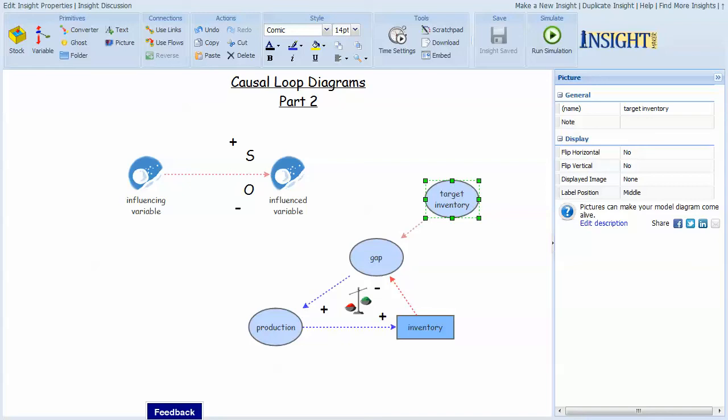All balancing structures have goals. They tend to produce curves that look like this. At this point, you're just going to have to believe me until we get into one of the sessions where we actually do simulations. But it starts off rapidly, and as it gets closer and closer to the goal, it tapers off.